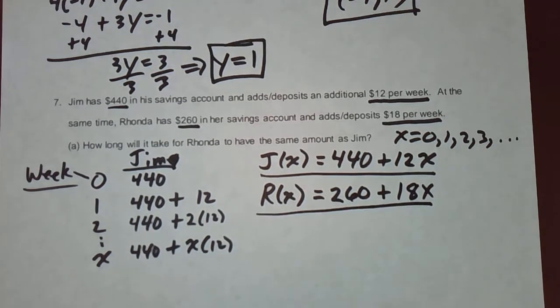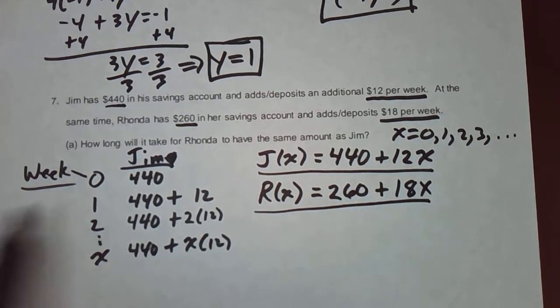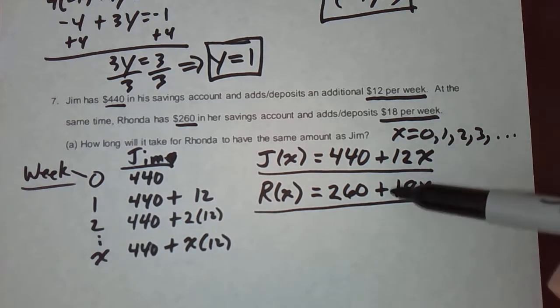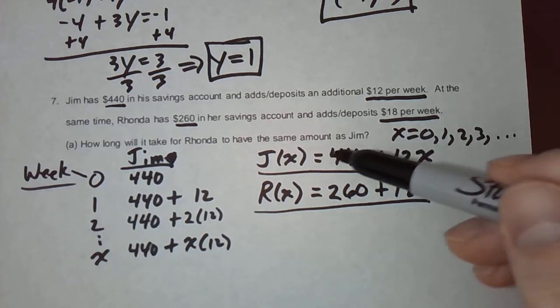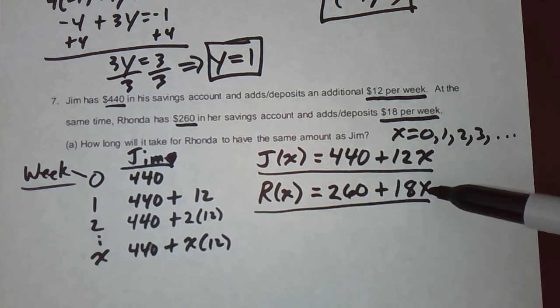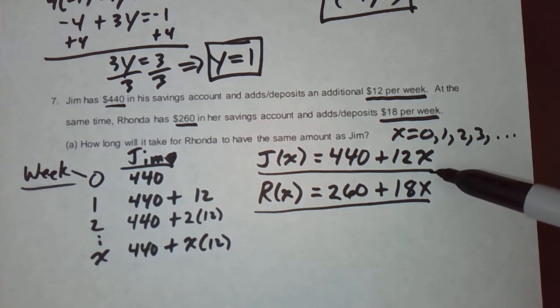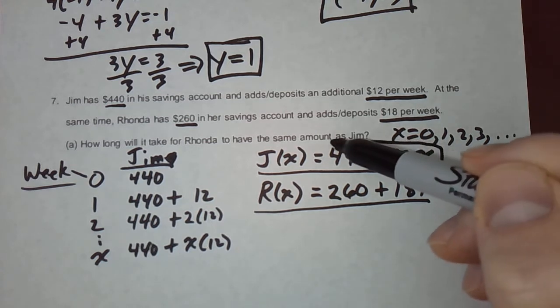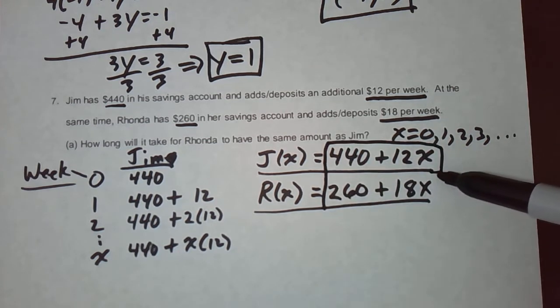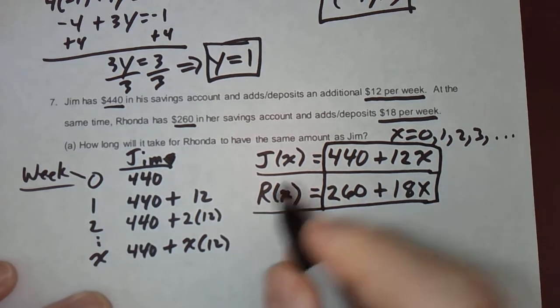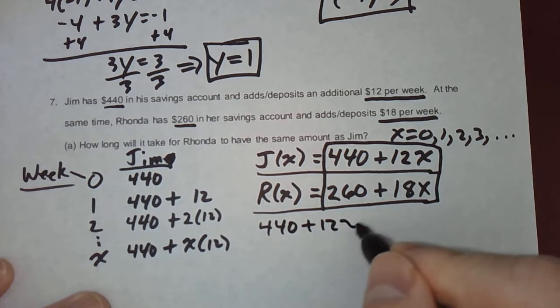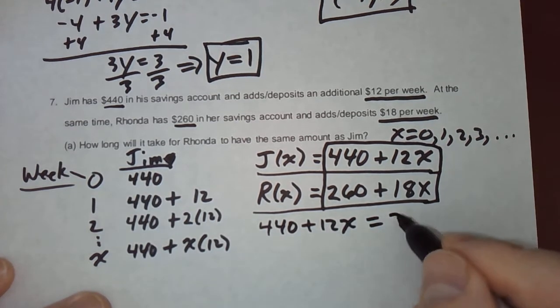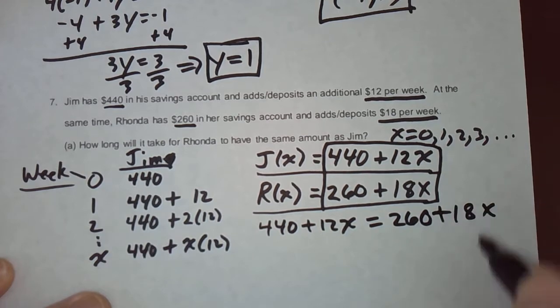Those are the two important functions. So, how long will it take for Rhonda to have the same amount as Jim? In other words, what week number will make Jim's amount equal to Rhonda's amount? We're just going to set these two expressions equal to each other and solve for X. When is 440 plus 12X equal to 260 plus 18X?